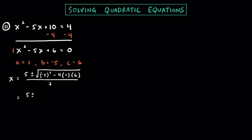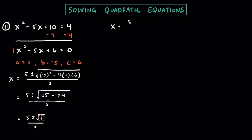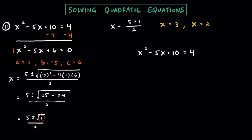Using the quadratic formula: x equals positive 5 plus or minus the square root of negative 5 squared minus 4 times 1 times 6, all over 2 times 1 which is 2. We have 5 plus or minus the square root of positive 25 minus 24, all over 2. Simplifying a bit more, we have 5 plus or minus the square root of 1, all over 2. Notice that we have a perfect square inside. So we get x equals 5 plus or minus 1 over 2.